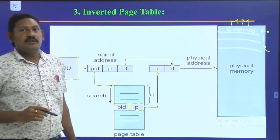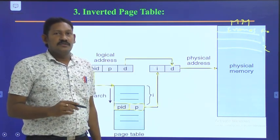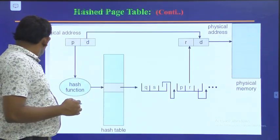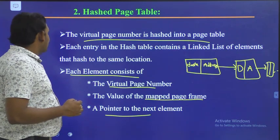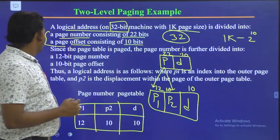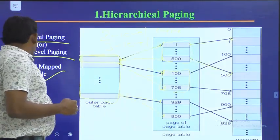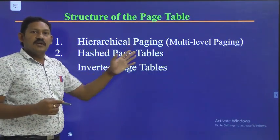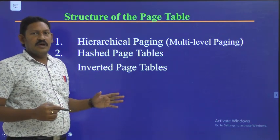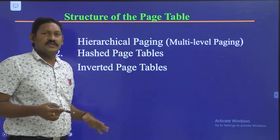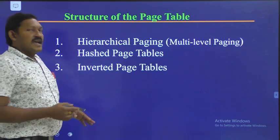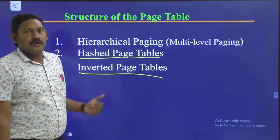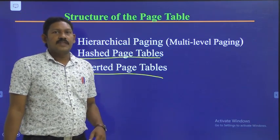So, the structure of page table has three varieties: the first is hierarchical paging, also called multi-level paging, two-level paging, or three-level paging; the second is hashed page table; and the third is inverted page table. Hope you have understood this. Thank you.